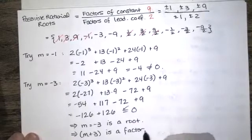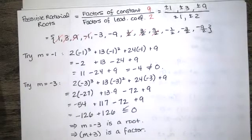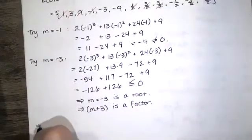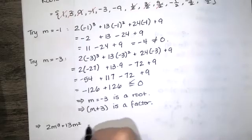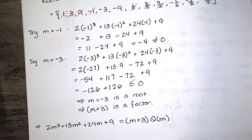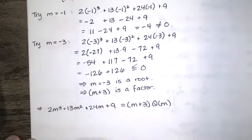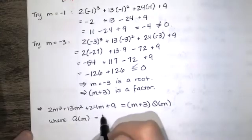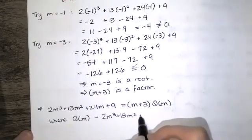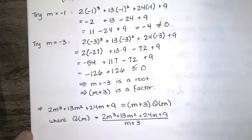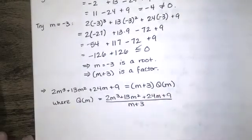That is just a property of polynomial functions. So our cubic characteristic equation 2m cubed plus 13m squared plus 24m plus 9 has m plus 3 as a factor, meaning it equals m plus 3 times some other polynomial. To find that polynomial we divide, and we'll use synthetic division.